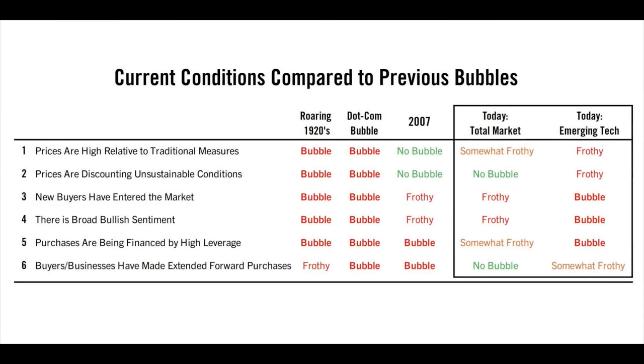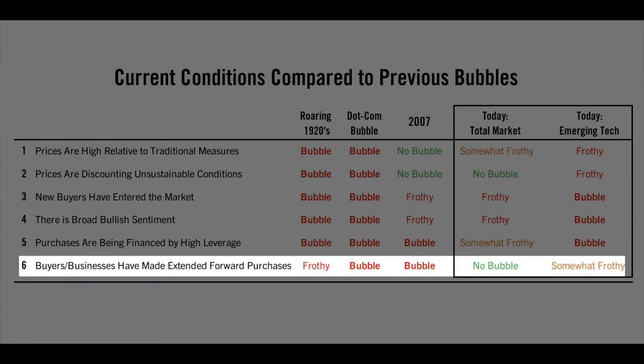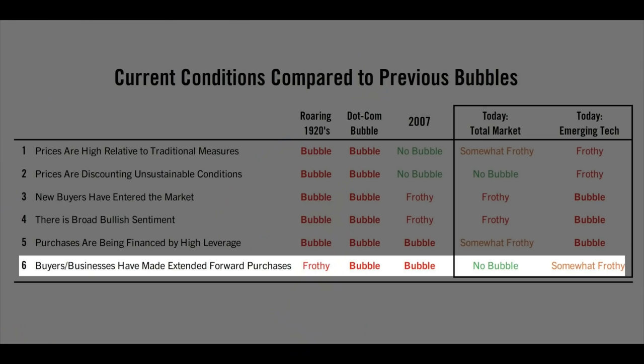Point five is big forward purchases. For example, somebody buying apartments they don't yet own because they think prices will go up. Back when Ray traded a lot of commodities, he would watch whether those who used commodities would move from buying hand-to-mouth to getting a lot of forward coverage — buying inventory to protect against rising prices. When they go from not wanting to own inventory to wanting to be protected against prices going up, that movement causes a lot of buying. Extended forward purchases are an indicator he uses.